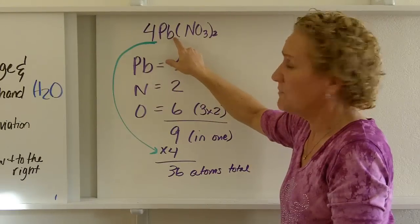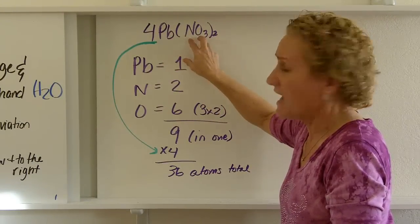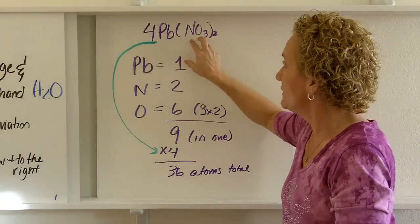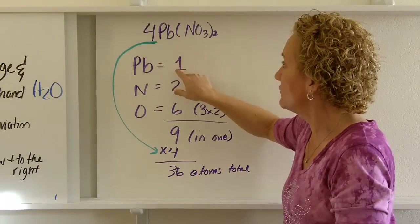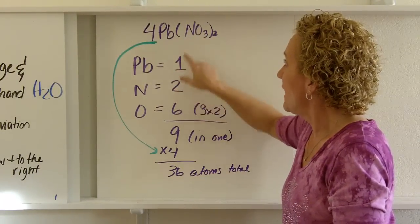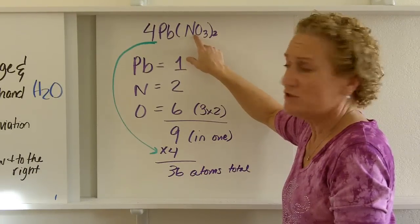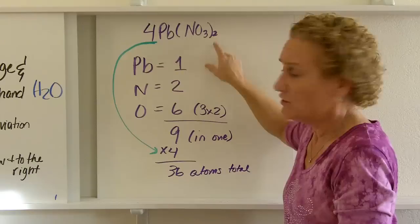There's a little invisible 1 right here. Notice that this 2 only acts on the things in the parentheses, not the thing before the parentheses. So it's like as if there's a little 1 right there. So there's 1 lead. How much nitrogen? 2. Again, there's an invisible 1 there, but you have to do 1 times 2. And 1 times 2 is 2.